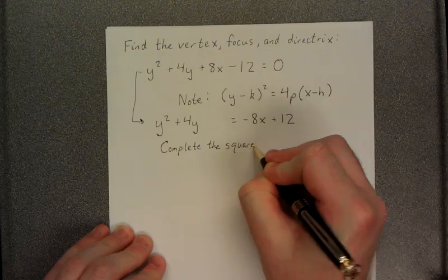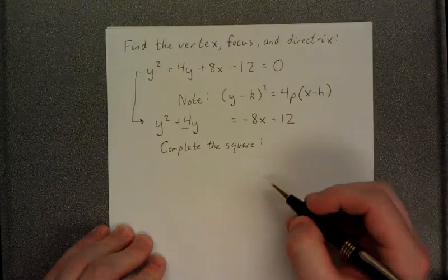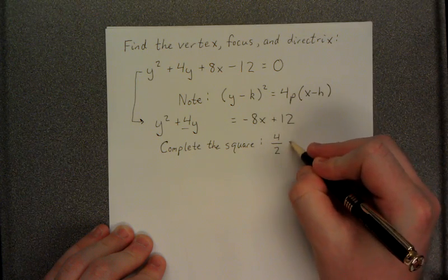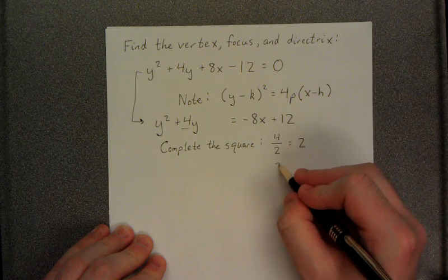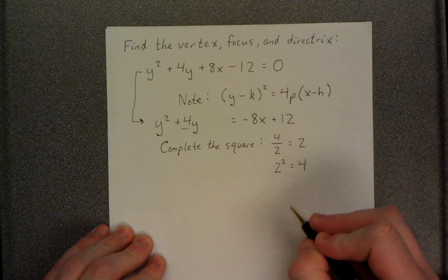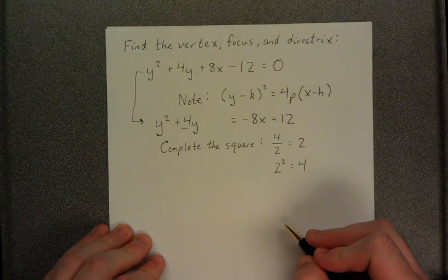In order to complete the square, we need to grab the coefficient of y. The coefficient of y is 4. The first thing we do is divide by 2, and we get a result of 2. Then we square that number, and we get 4. This is the constant that we're going to add to both sides of the equation to complete the square.